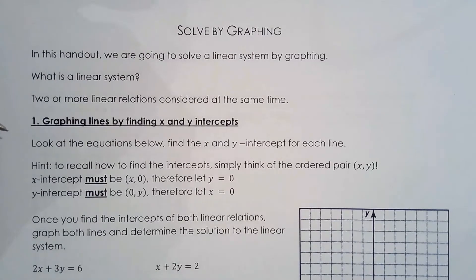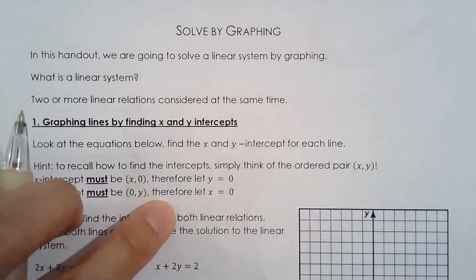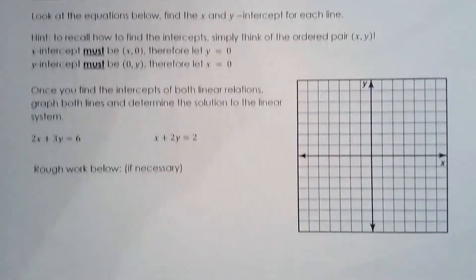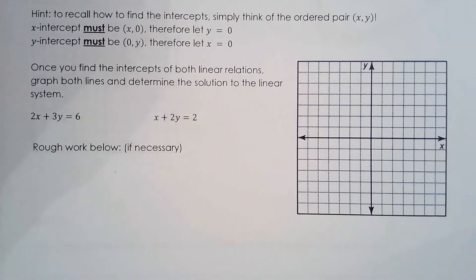We are going to solve a linear system by graphing. What that means is we are trying to find where the lines intersect. Where the lines intersect will be the solution to the linear system — that point is called the point of intersection.